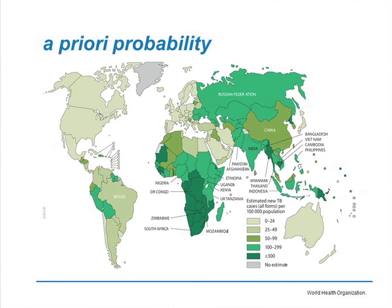The rates are much higher in China, Russia, Sub-Saharan Africa, Peru, and other countries in South America. Clearly, if patients come from these areas, they have a much higher risk of being infected at baseline.